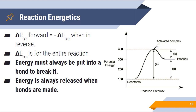Two very important things to understand: energy must always be put into a bond to break it. Anytime we break chemical bonds, that is an endothermic process — we have to put energy into them in order to break them. Energy is always released when bonds are made. Anytime we make chemical bonds, that is an exothermic reaction — energy goes out to the environment. So when bonds are made, energy is released and they are exothermic.